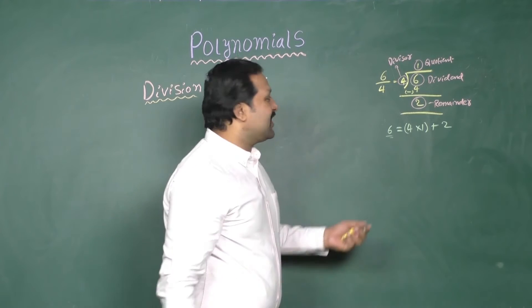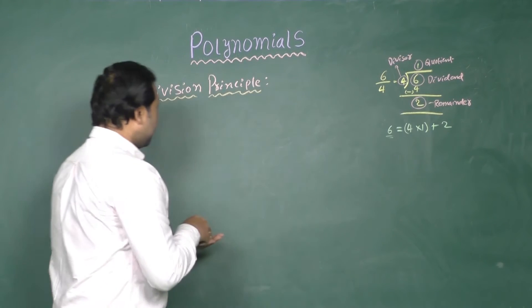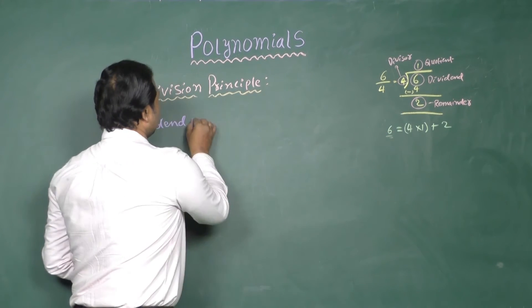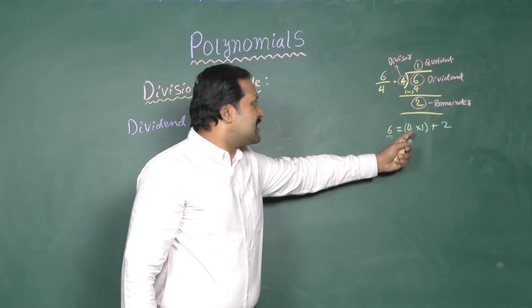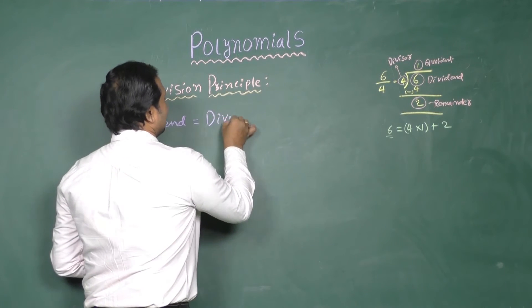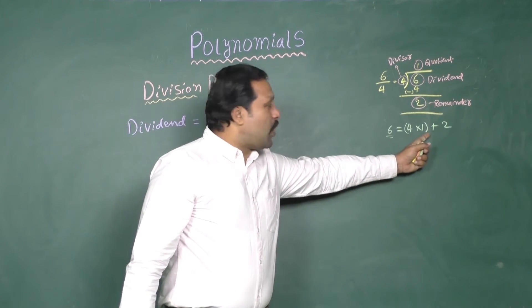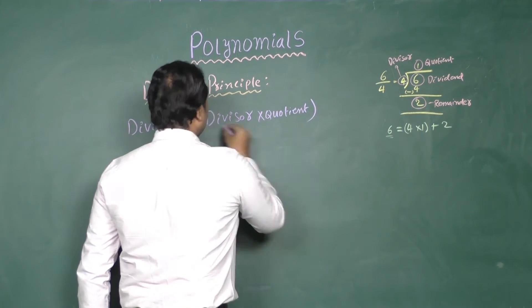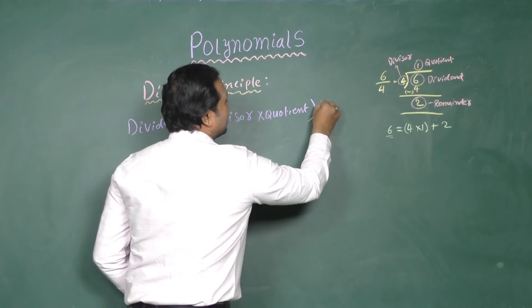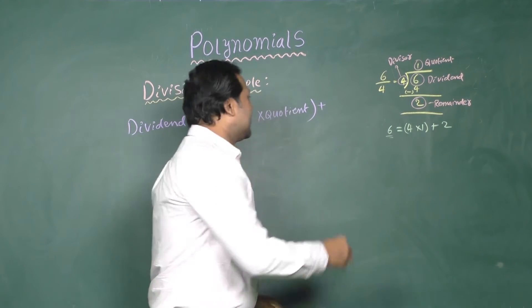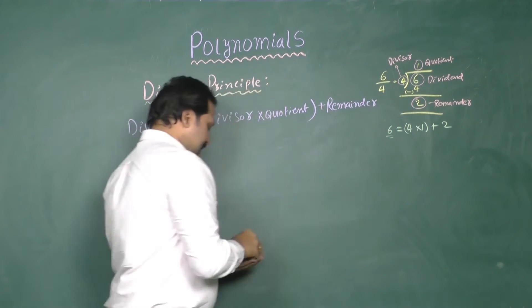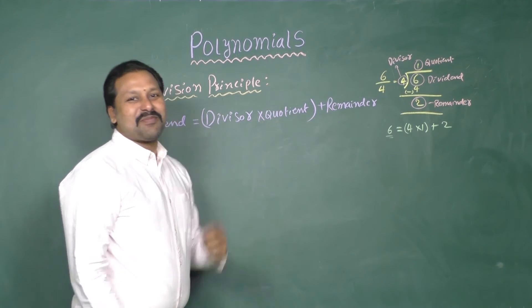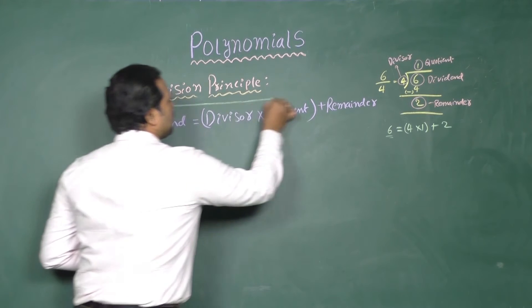What does 6 represent here? 6 is nothing but Dividend. What does 4 represent? Divisor times 1. What does 1 represent? Quotient. Plus, what does 2 represent? Remainder. So, Dividend equals Divisor times Quotient plus Remainder. This is called Division Principle.